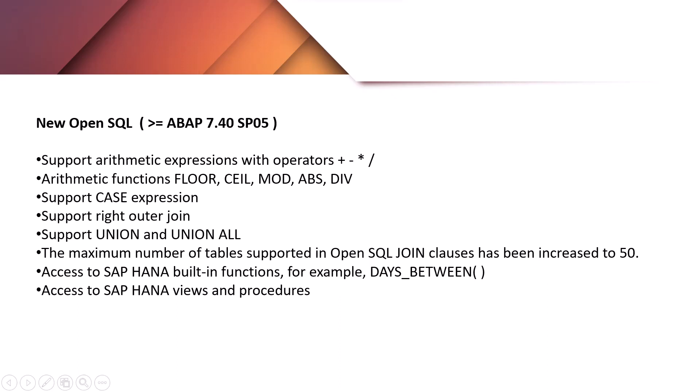With New OpenSQL, the maximum number of tables supported in OpenSQL join clauses has been increased to 50. In New OpenSQL, it is also possible to access SAP HANA built-in functions, SAP HANA views, and SAP HANA procedures.